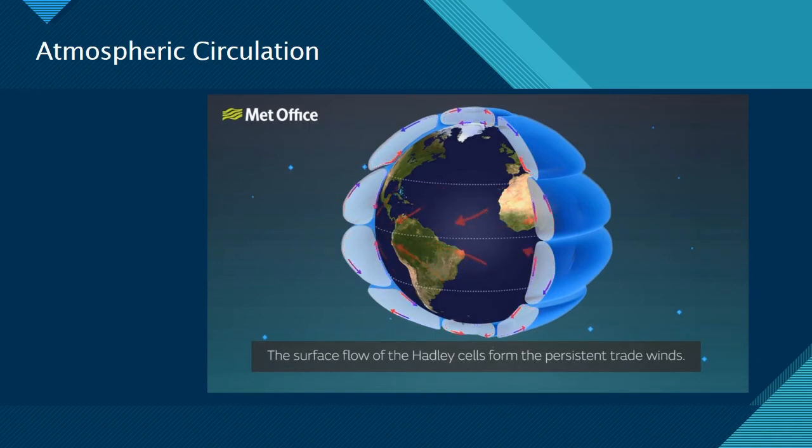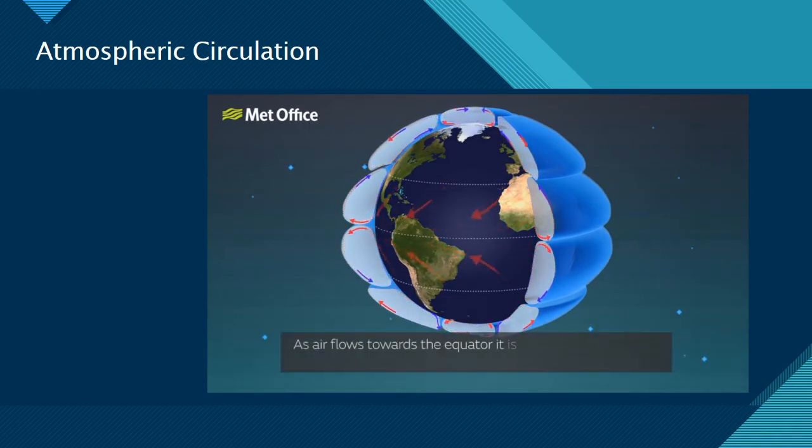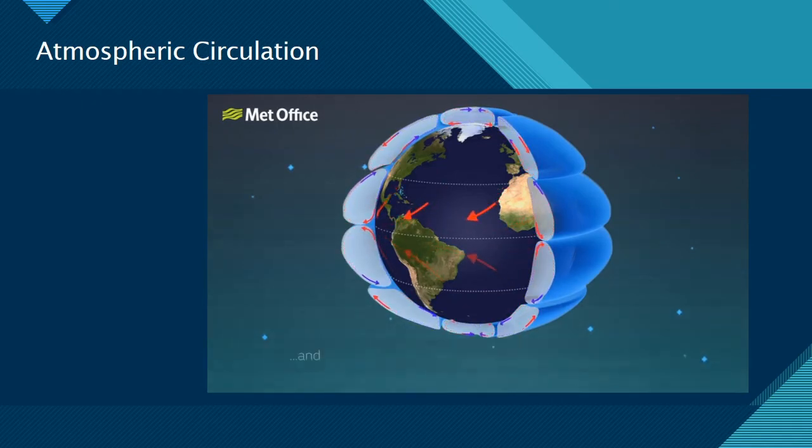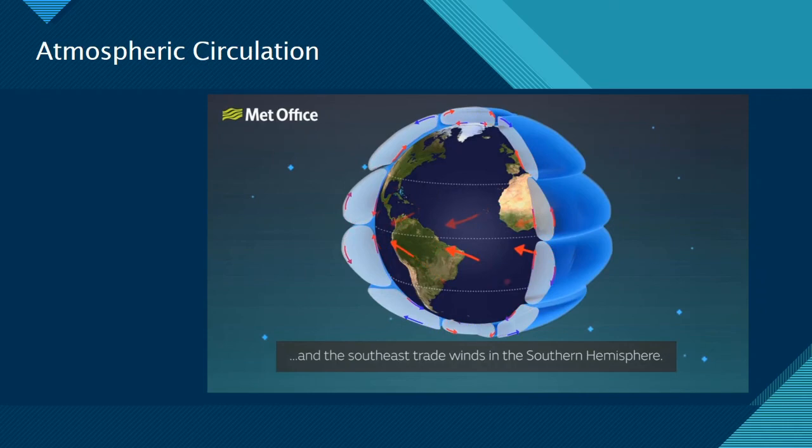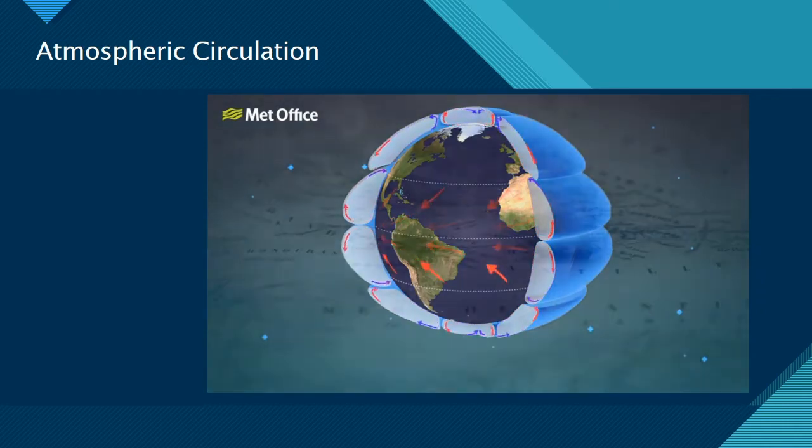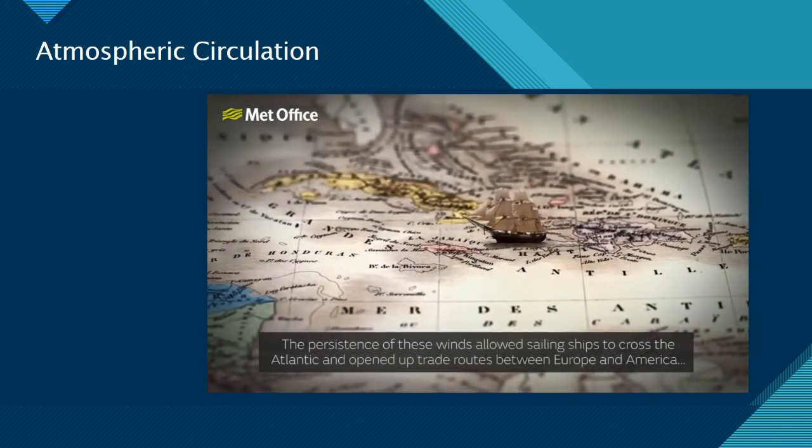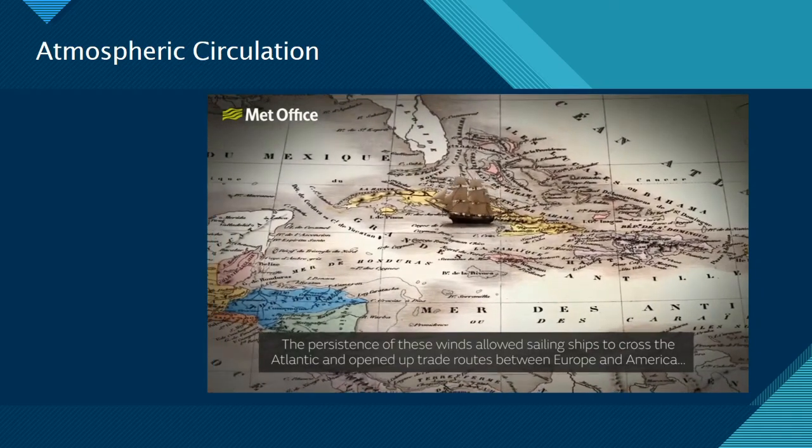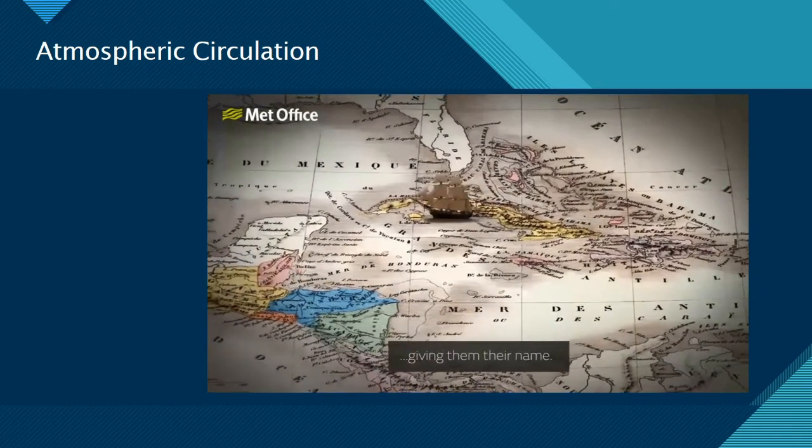Winds at the surface are also subject to deflection from the Coriolis force. The surface flow of the Hadley cells form the persistent trade winds. As air flows towards the equator, it is deflected towards the west in both hemispheres, forming the northeast trade winds in the northern hemisphere and the southeast trade winds in the southern hemisphere. The persistence of these winds allowed sailing ships to cross the Atlantic and opened up trade routes between Europe and America, giving them their name.